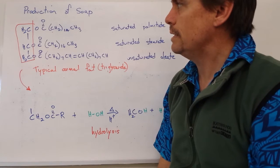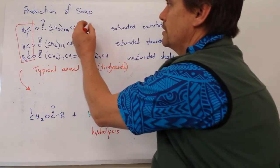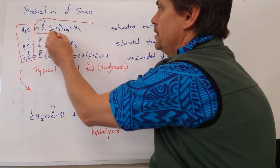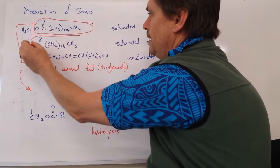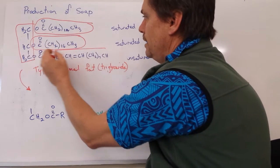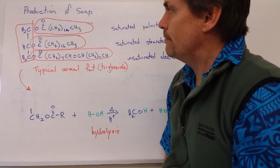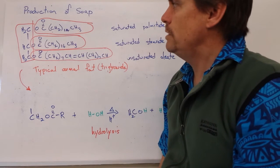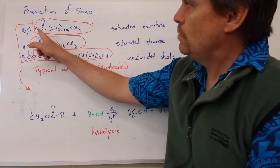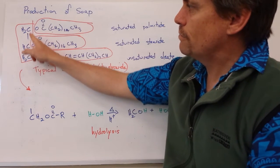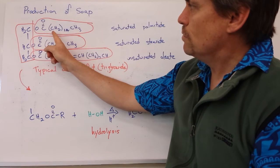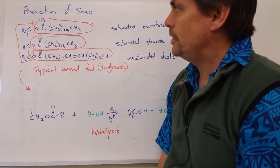We've also got some long chains here, here, and here. Now those three chains look very different, but they do have a few things in common. First of all, they have this ester linkage to our glycerate derivative here. They also have a very long carbon chain.